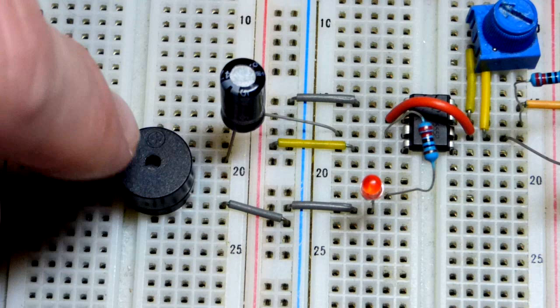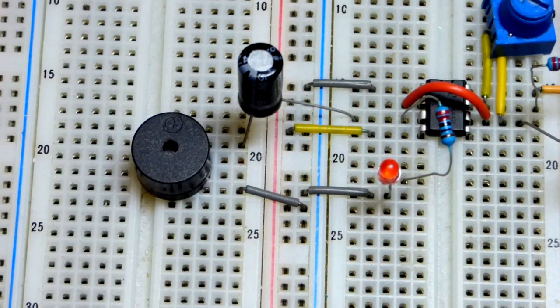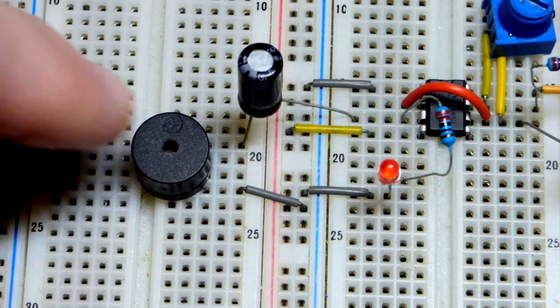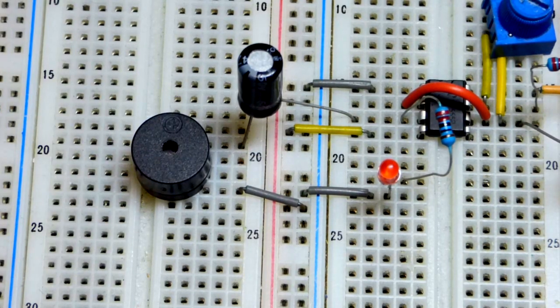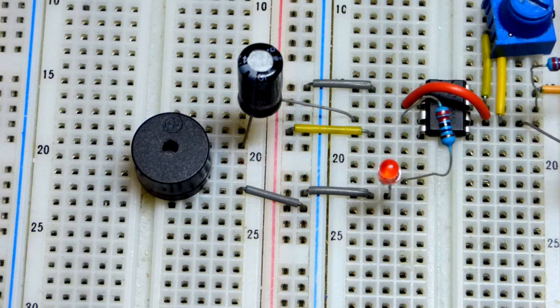So any case, current is changing direction through both the capacitor and through the buzzer here, and so that is how the passive buzzer makes its sound—it's clicking or it's buzzing depending on how fast it's going.